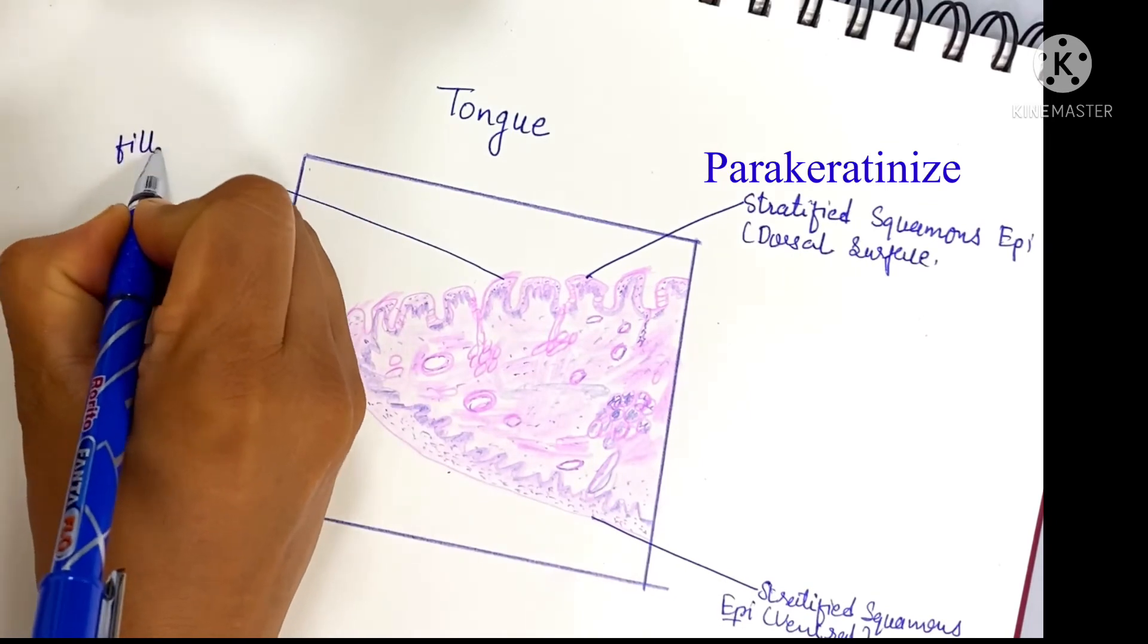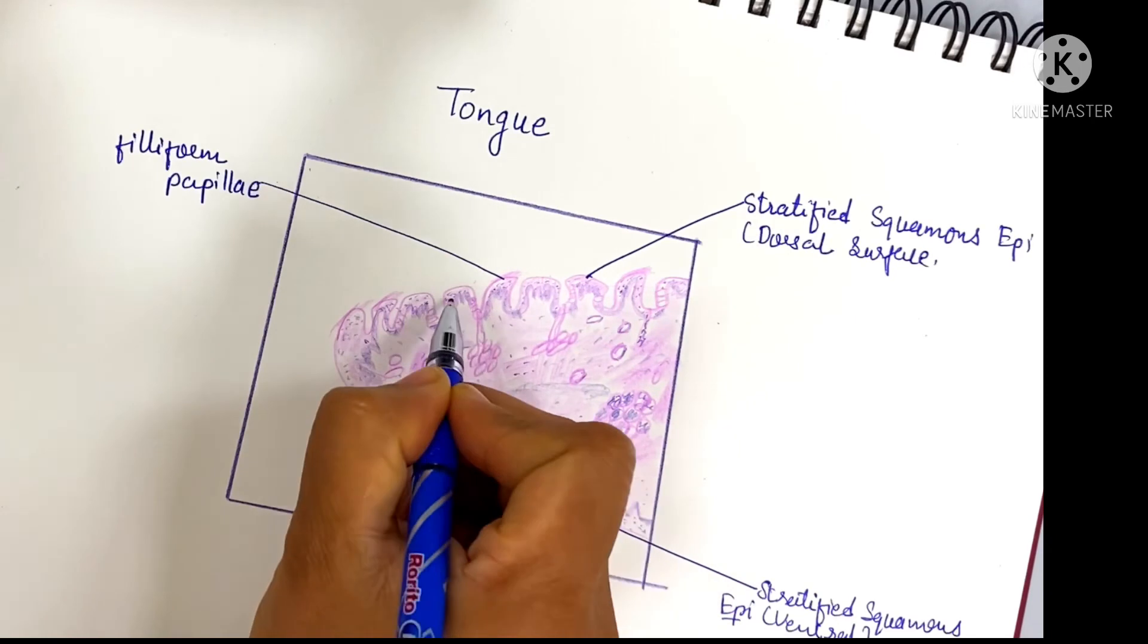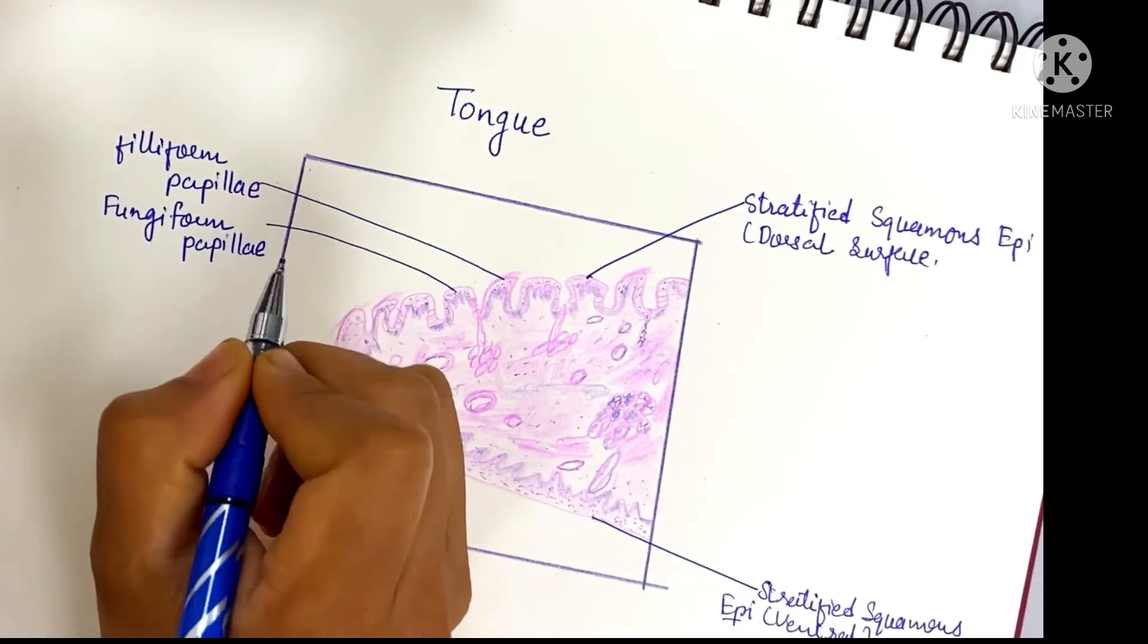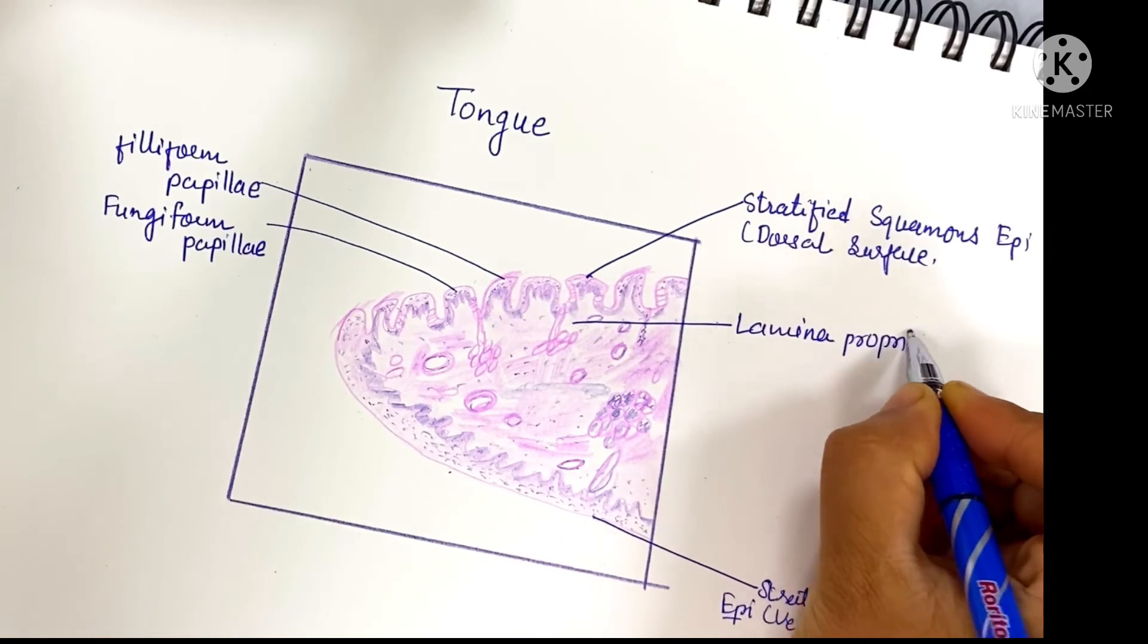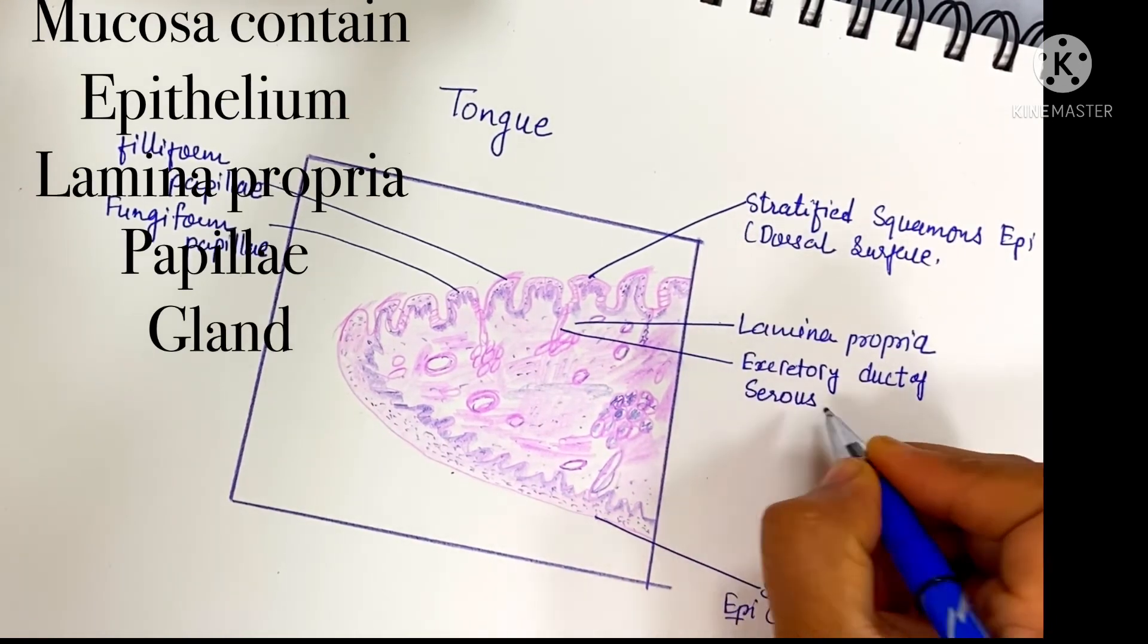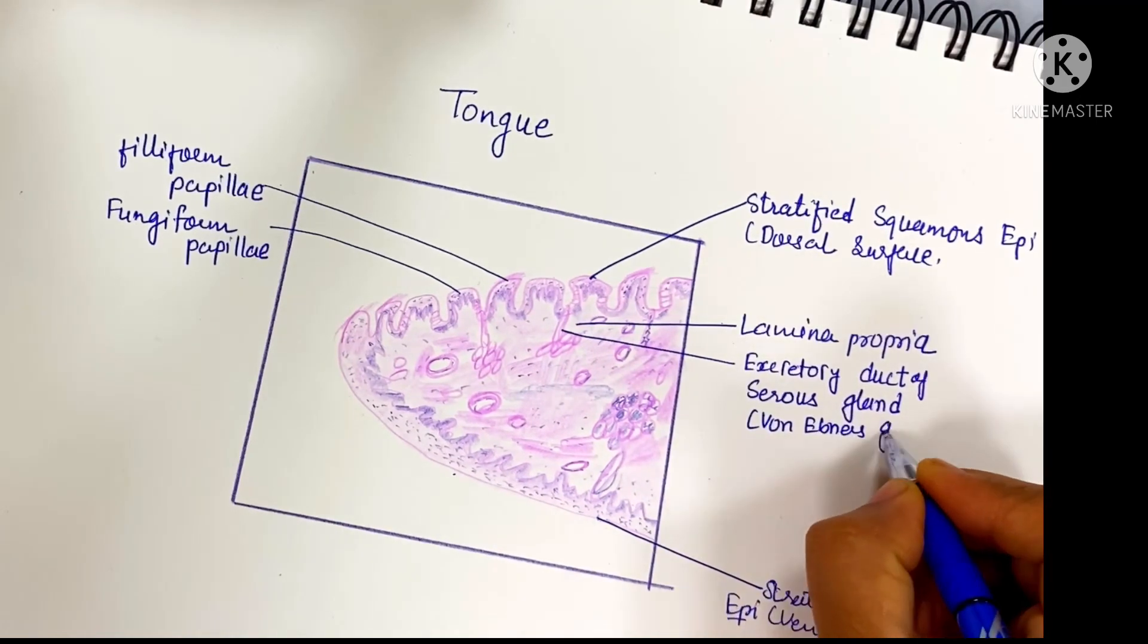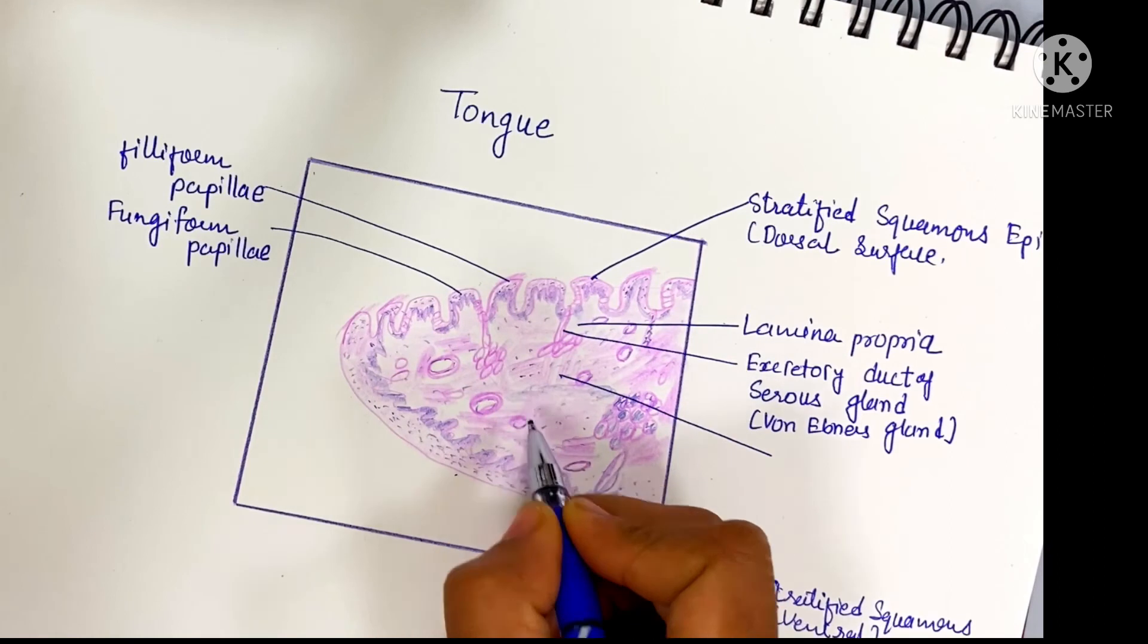Papillae are lined by stratified squamous epithelium. Filiform papilla is partly keratinized. Fungiform papilla has lamina propria and excretory duct. In circumvallate papilla, gland ducts open into the groove around the papilla - these are serous glands known as von Ebner's glands.